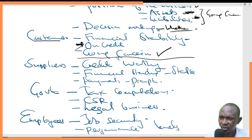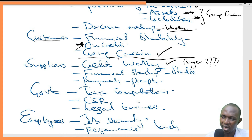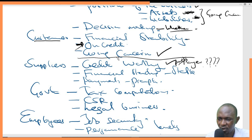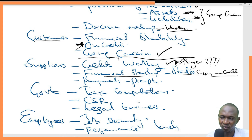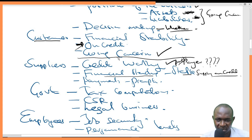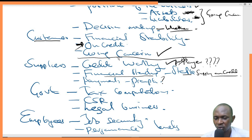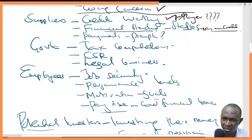Suppliers will want to know if you pay promptly. Most suppliers prefer supplying goods to customers who will pay promptly. They'll want to make a financial decision on whether they can supply goods to you on credit — are you stable enough for that? Will you pay them promptly? Those are some of the key questions in a supplier's mind.